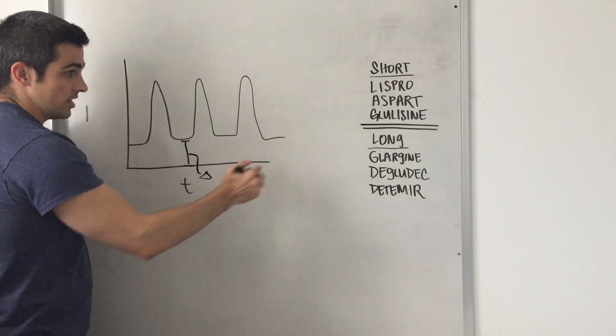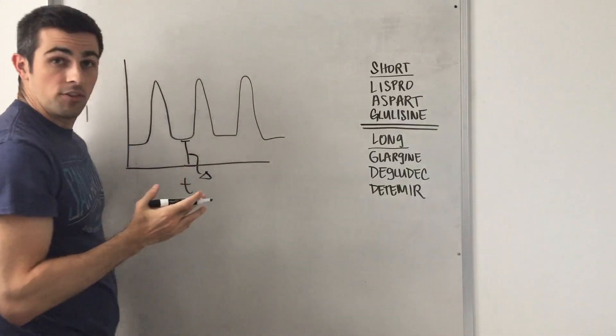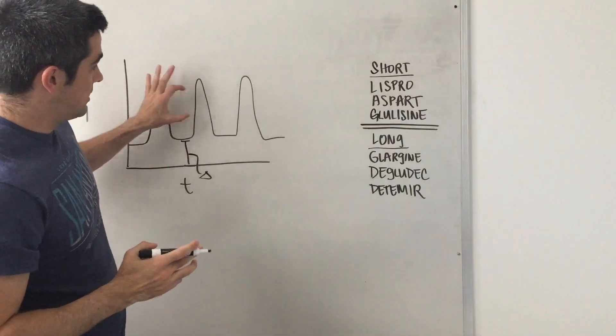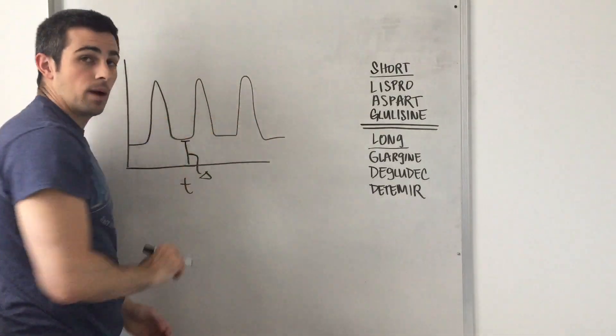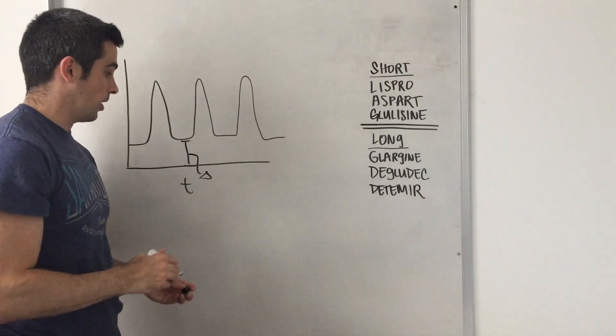This insulin level is going to be covered by your long-acting insulins. We just call this glargine. Your insulin that is in response to meals is going to be covered by your short-acting insulins, and this is the first portion on how to properly prescribe on the floor.